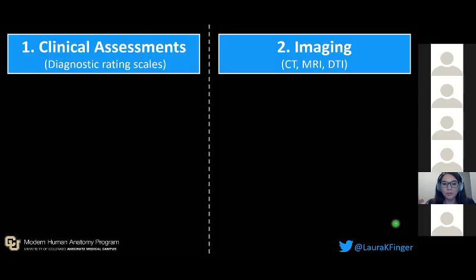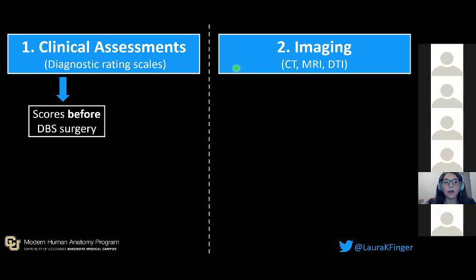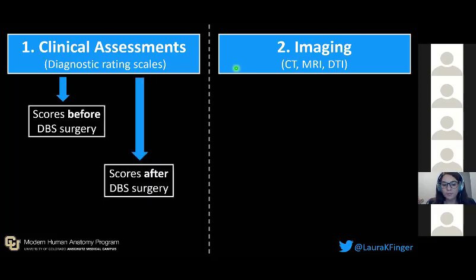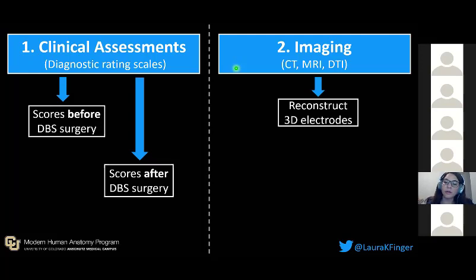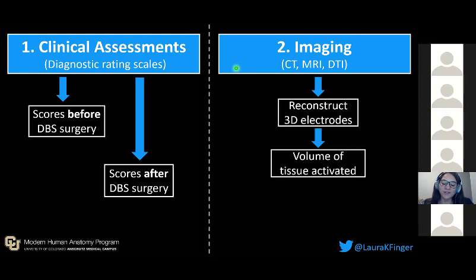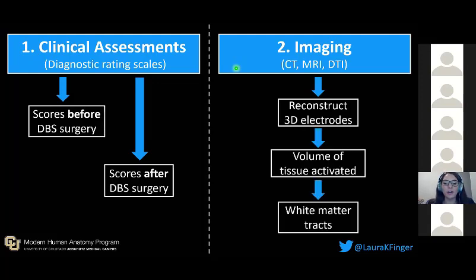My project has two main components: the first being clinical assessments, or diagnostic rating scales, and the second being imaging with CT, MRI, and DTI. With the clinical assessments, we can look at the YBOCS scores before DBS surgery and after surgery. With imaging, we can reconstruct the 3D DBS electrodes, get a volume of tissue activated, and see white matter tracts going through that area. Then we put the two together and see if there's a correlation.